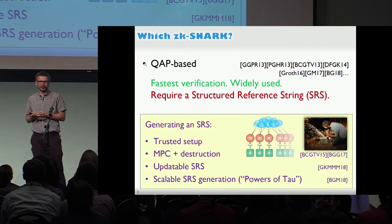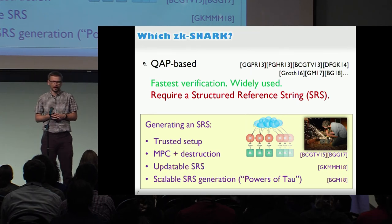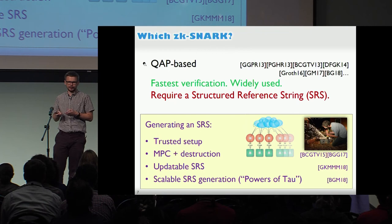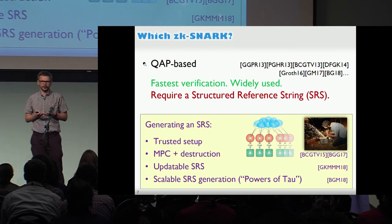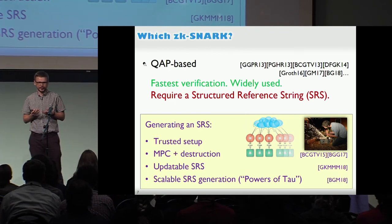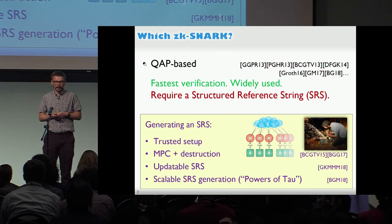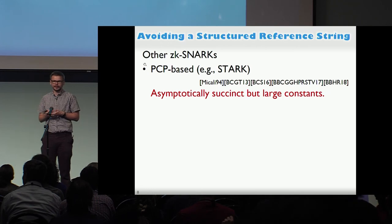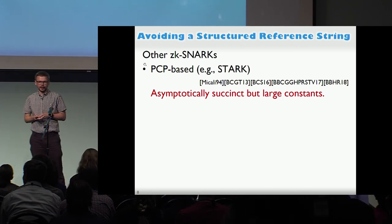Or you could use a multi-party computation ceremony. The best ceremony is scaled to hundreds of participants - this is, for example, what ZCash did. But ideally, you would want to use a proof system that doesn't require a common reference string at all. We do have such systems, for example PCP-based systems such as the STARK system.